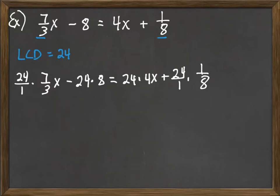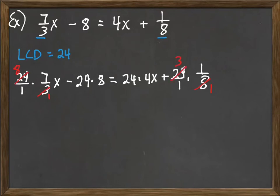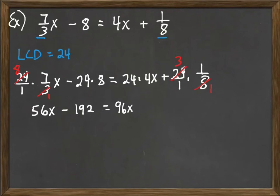We can now go through and start canceling. The three in the bottom cancels with twenty-four, leaving us with eight. Twenty-four times eight — nothing simplifies, we just multiply it out. Same with twenty-four times four x. For the last fraction, one-eighth, the eight in the bottom cancels with twenty-four to give three. Putting it together: eight times seven is fifty-six x; twenty-four times eight is one hundred ninety-two; twenty-four times four is ninety-six x; and three times one is just three. We've now gotten rid of all the fractions.